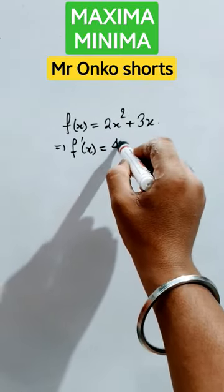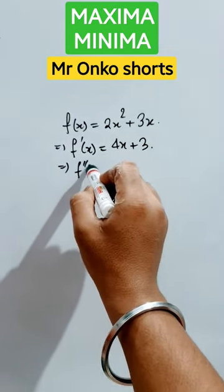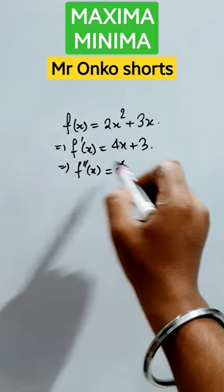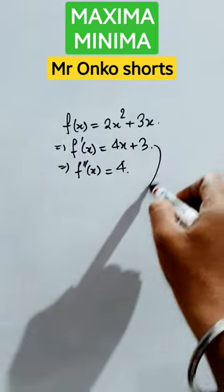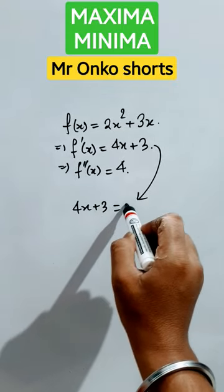That will be 4x plus 3. Now let's find the second order differentiation with respect to x. That is 4. Now this part, that is the first derivative of the function, is always equals to 0 whenever the max or min value has been arrived for the function.